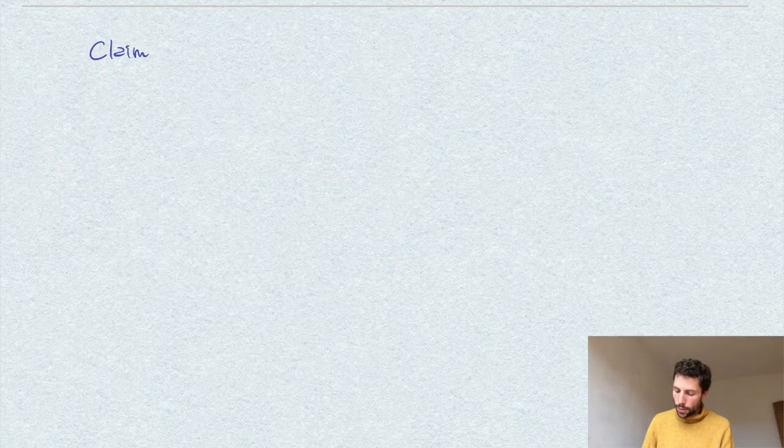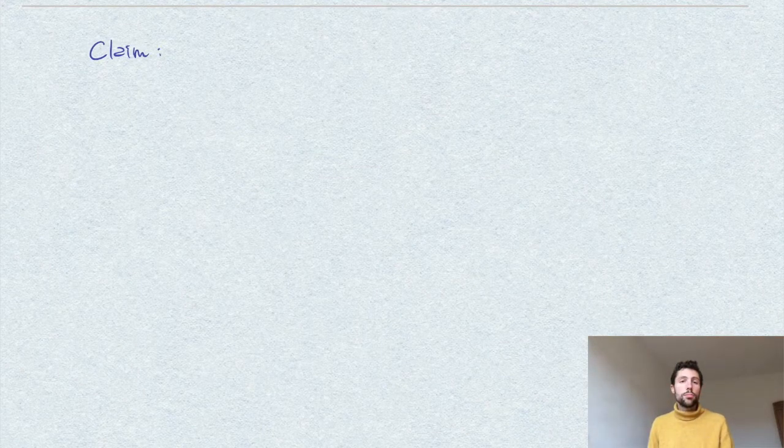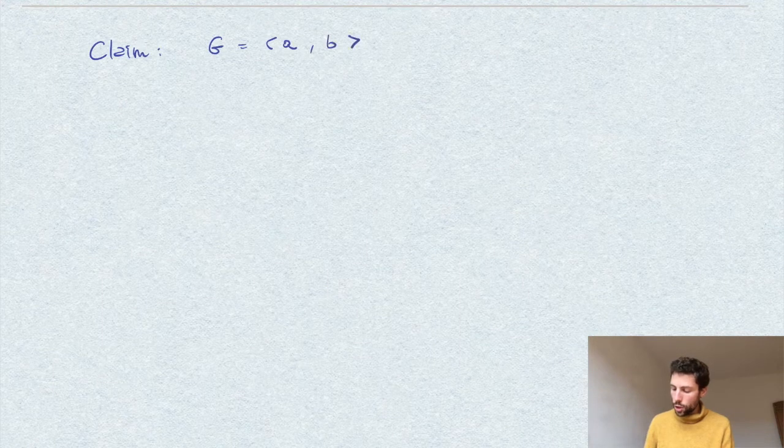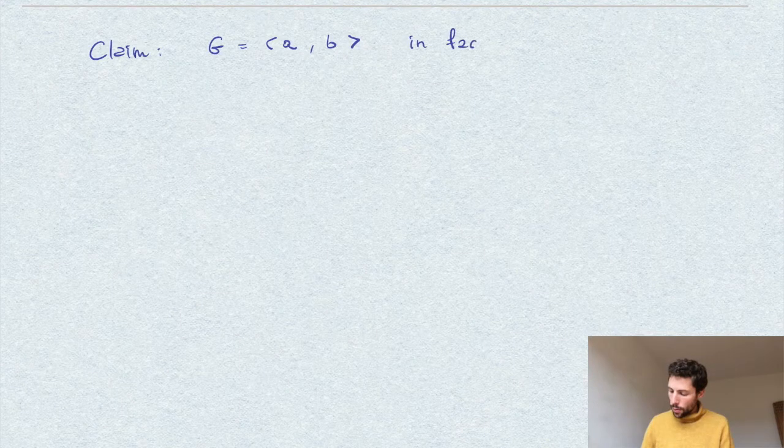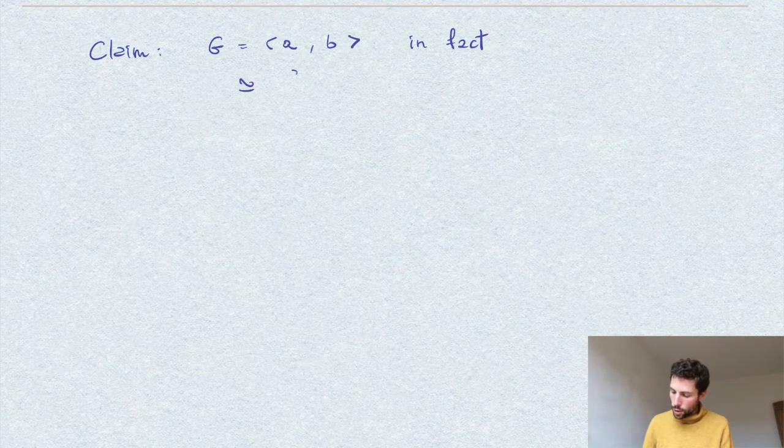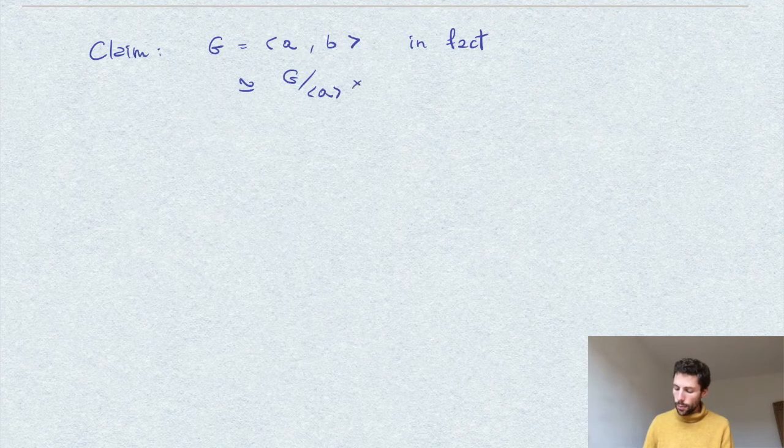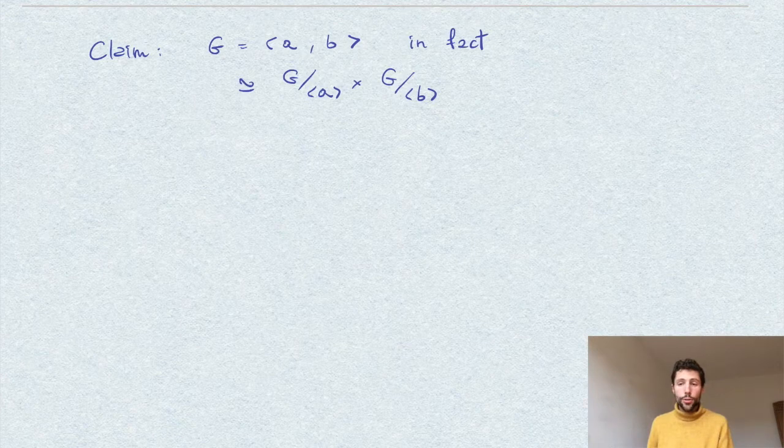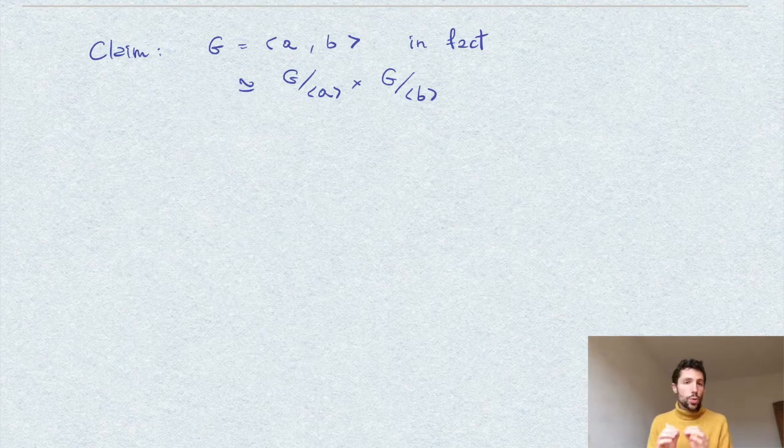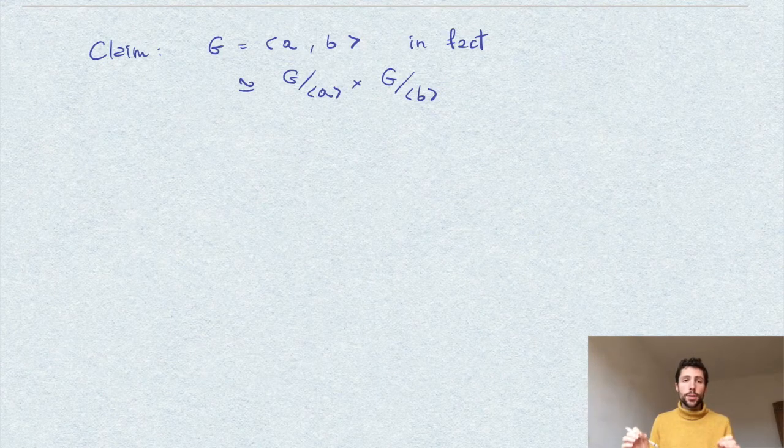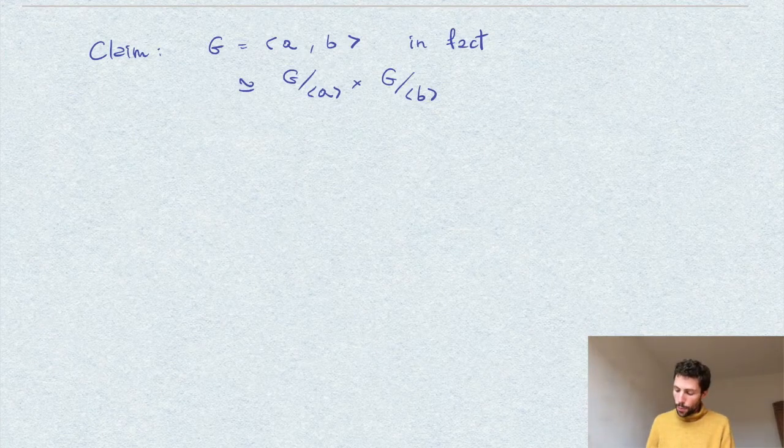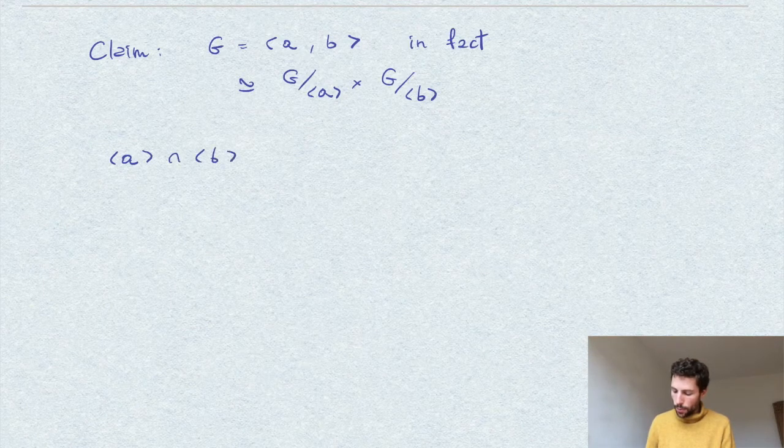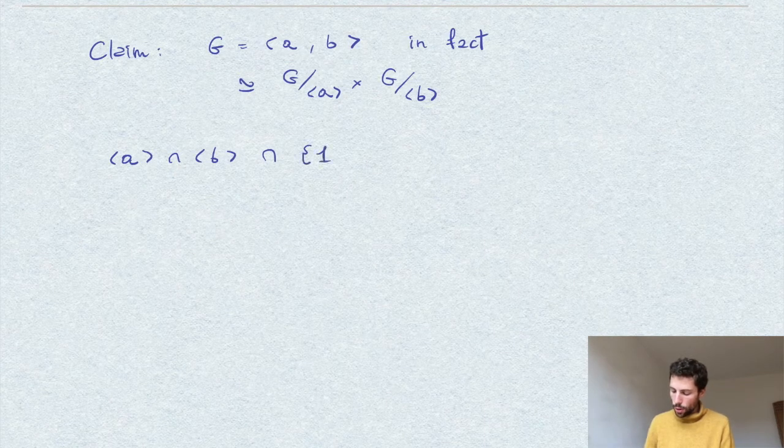So now, the claim is that we can, in fact, pick two such subgroups, say, two generators A and B of these groups, and write G as generated by A and B. In fact, what we show here is even that G is isomorphic to the product of these two quotients. So here, of course, what I mean is that I picked A and B, two generators of order p of two distinct subgroups of this subdivision that I mentioned. So I chose A and B in this way, and this, in particular, means that the groups generated by A and B,